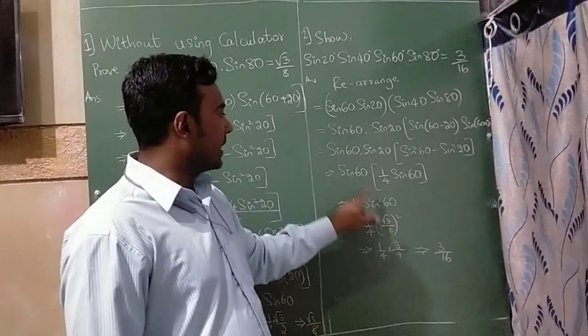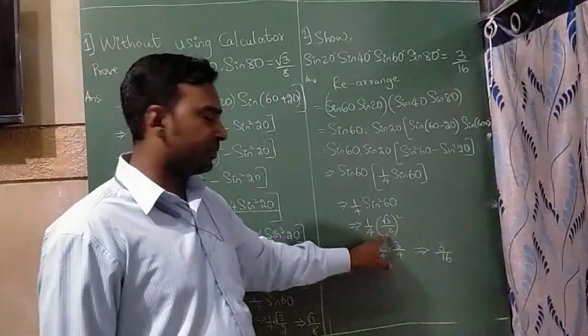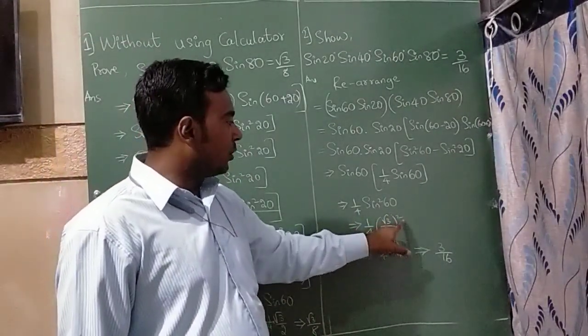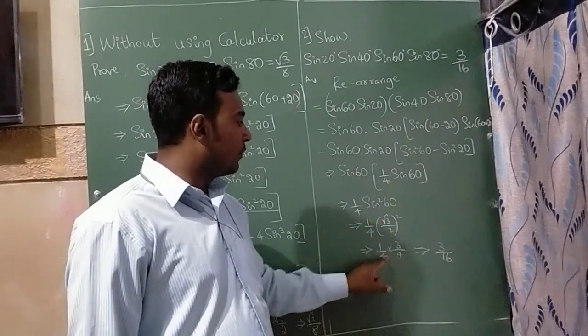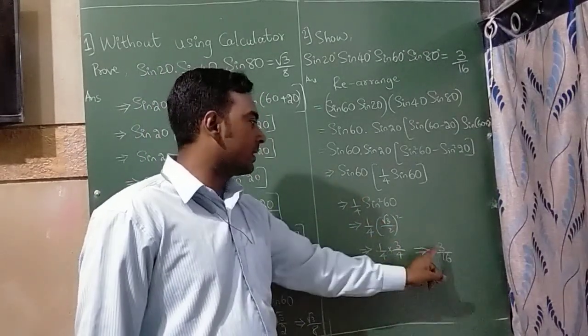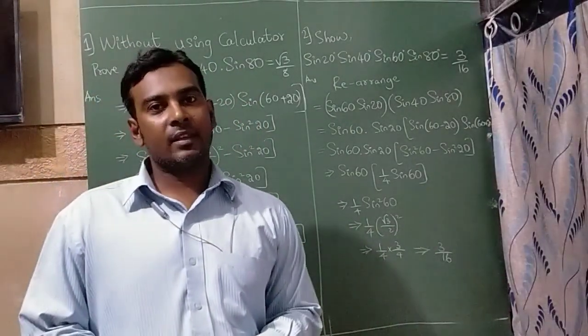So sin 60 into sin 60 is sin square 60 degree, so sin 60 degree is root 3 by 2, square root and square get cancelled, so 2 square will become 4, 4 times 4 is 16, 3 times 1 is 3. I hope you all understood these two sums, thank you very much.